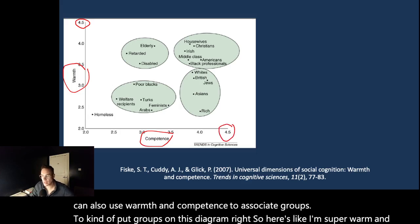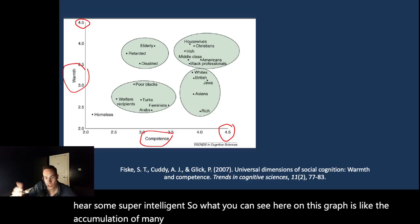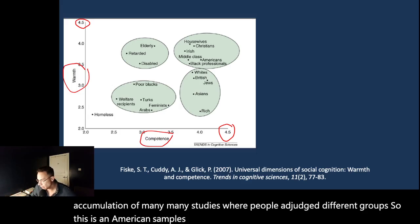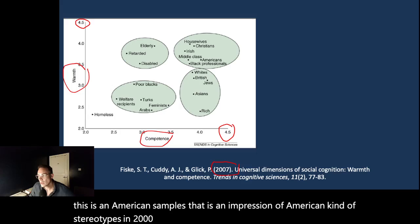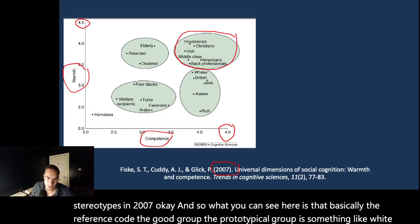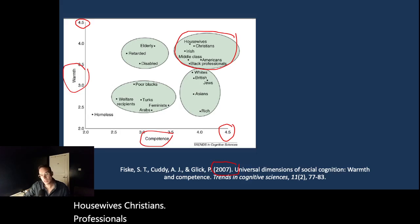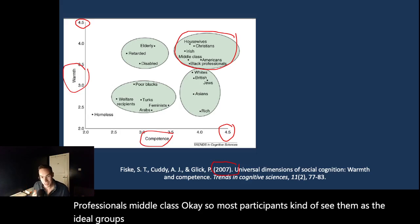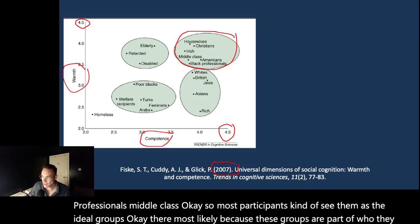So what you can see here on this graph is the accumulation of many studies where people judge different groups. This is an American sample, so this is an impression of American stereotypes in 2007. And what you can see here is that basically the reference group, the good group, the prototypical group is something like white housewives, Christians, professionals, middle class. Most participants see them as the ideal groups. They rate them high on competence and warmth.